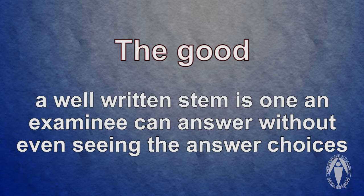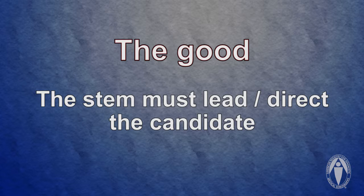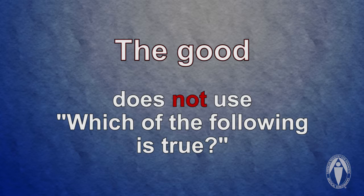A good stem is one that you can answer without even seeing the answer choices. If you cover up the answer choices and just read the stem, the candidate should be able to think in their mind where this is going. If I ask you the color of the sky, you would think 'blue' and then look down the answer choice list and find blue — that's the thought process we want. The stem has to lead you and tell you what it's looking for: a disease, something else, or an image. We do not want stems that say 'which of the following is true' — that's essentially a four-choice true/false question where you have to read each answer choice. That's bad form; we don't do that.